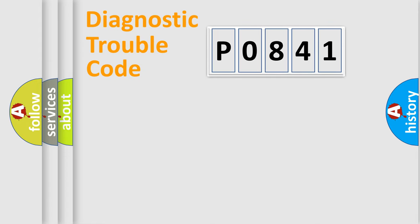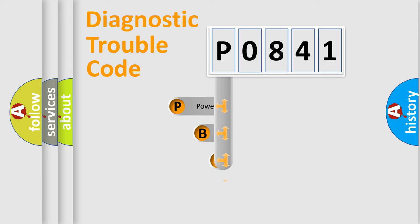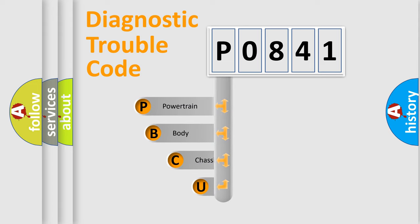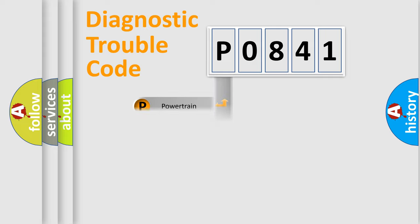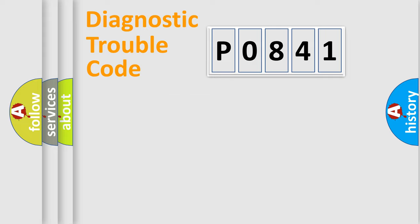Let's do this. First, let's look at the history of diagnostic fault code composition according to the OBD2 protocol, which is unified for all automakers since 2000. We divide the electric system of an automobile into four basic units: Powertrain, Body, Chassis, and Network.